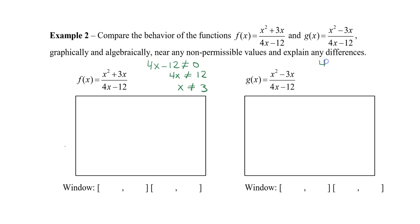Now it doesn't matter whether it's the first function f(x) or the second function g(x), but because the denominators are the same, we're going to have the same non-permissible value of 3.